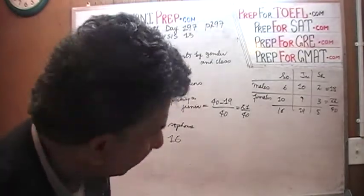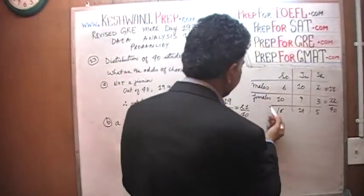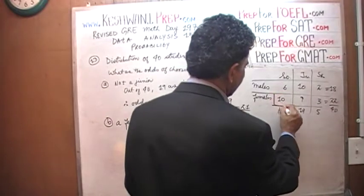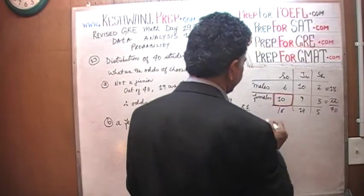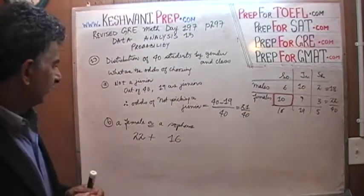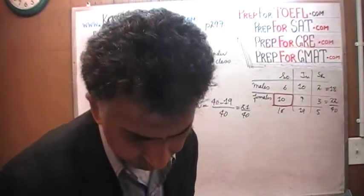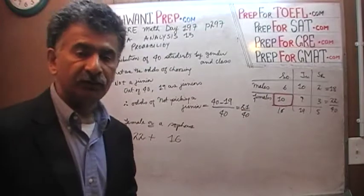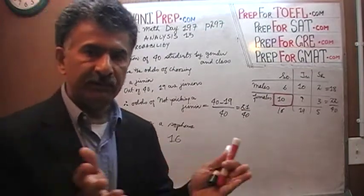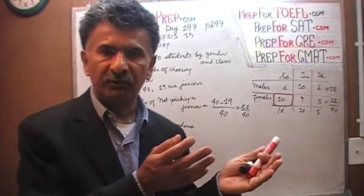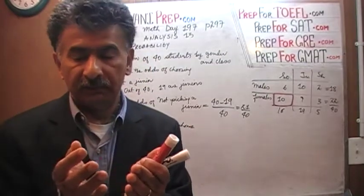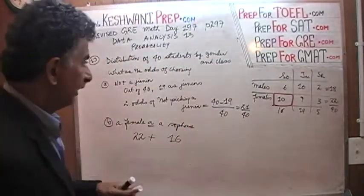And if we simply want to add them up, what we notice is that when we look at the females and when we look at the sophomores, this figure is double counted. This figure is double counted. In other words, we have 10 females who are also sophomores.